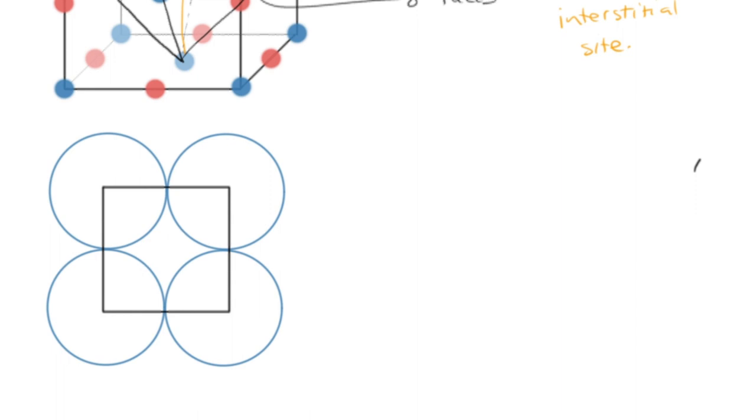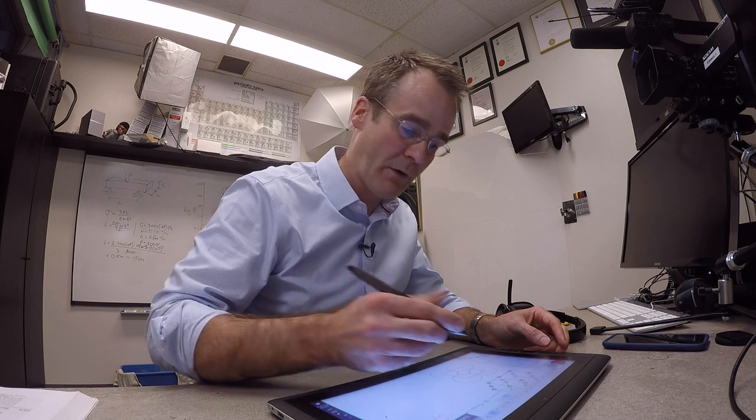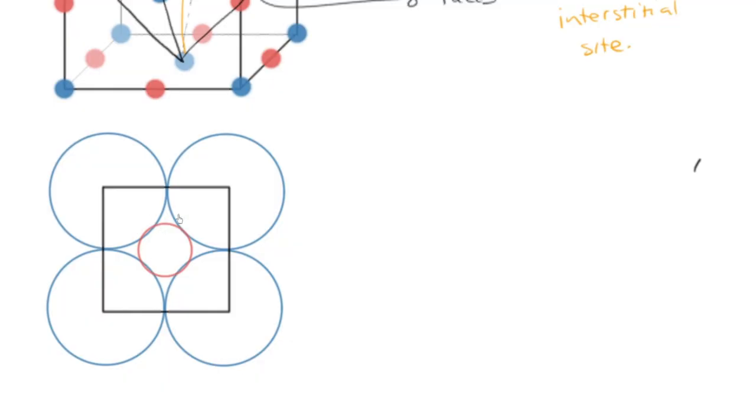Because, what we're trying to do, remember, is we're trying to determine the size of the interstitial site or the size of the cation that will just perfectly fit in there. So for example, if I keep making this a little bit bigger, when does it just touch? Right there, it's just perfectly touching each of the nearest neighbor atoms. There's four in the plane, you remember there's one up above and there's one below. So that's still coordination number six. We're just looking in this one plane. So it's making contact with four nearest neighbor anions.